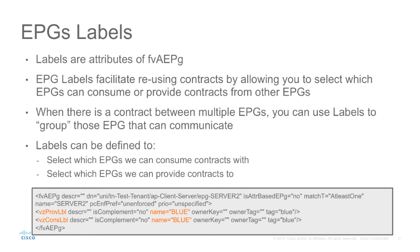You can see a quick XML description of an EPG where we are providing a label named blue and we are consuming label named blue as well. This means that we will be able to communicate with EPGs that provide contracts and EPGs that consume contracts if those EPGs have the label blue.